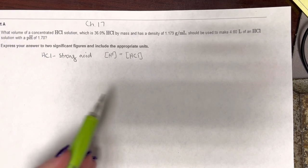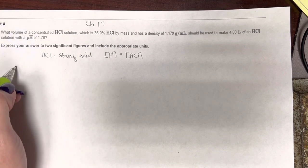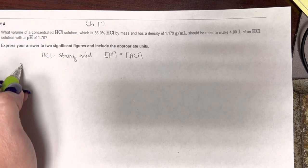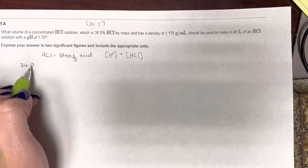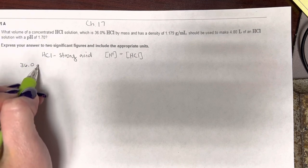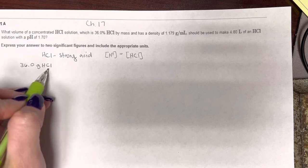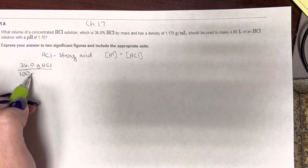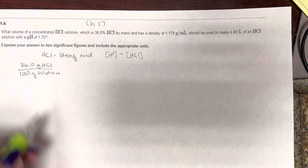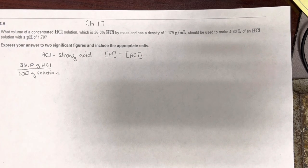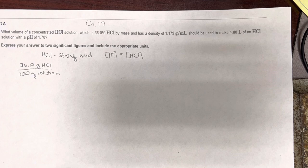We also need to make a definition, like we did in the solutions chapter, that 36.0% by mass means 36 grams of HCl per 100 grams of solution. So hopefully that's helpful.